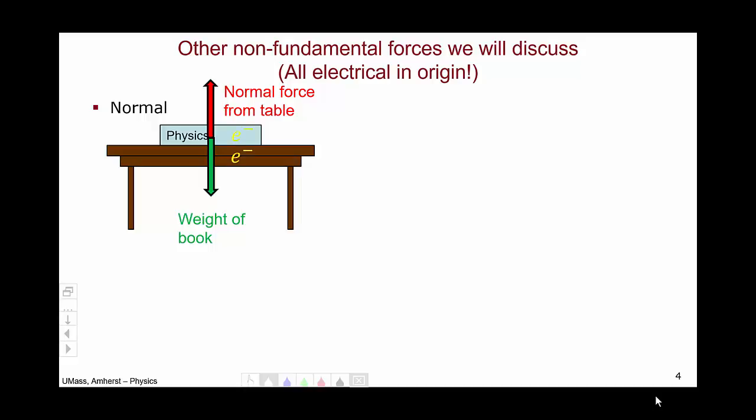At the microscopic scale, this normal force arises from the repulsion of electrons in the book to the electrons within the table. So at the microscopic scale, this force is electrical. However, at our macroscopic scale that we deal with in our everyday world, we're averaging over all of these different atoms and just calling their net effect a normal force.